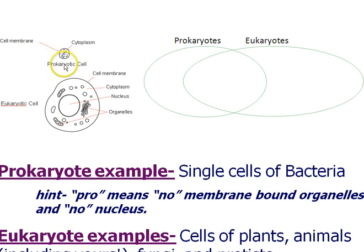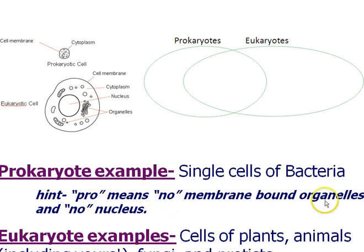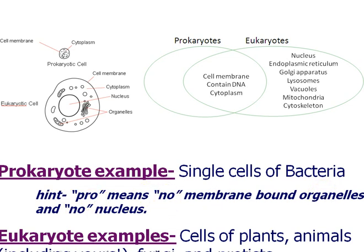Prokaryotic cells include the single cells of bacteria — all of them are unicellular. A hint to help you remember: 'pro' means no membrane-bound organelles, such as nucleus, endoplasmic reticulum, Golgi apparatus, lysosomes, vacuoles, and mitochondria — all those are not found in prokaryotes. 'Pro' means before and 'karyote' means nucleus, so we're just using a mnemonic trick to help us out.